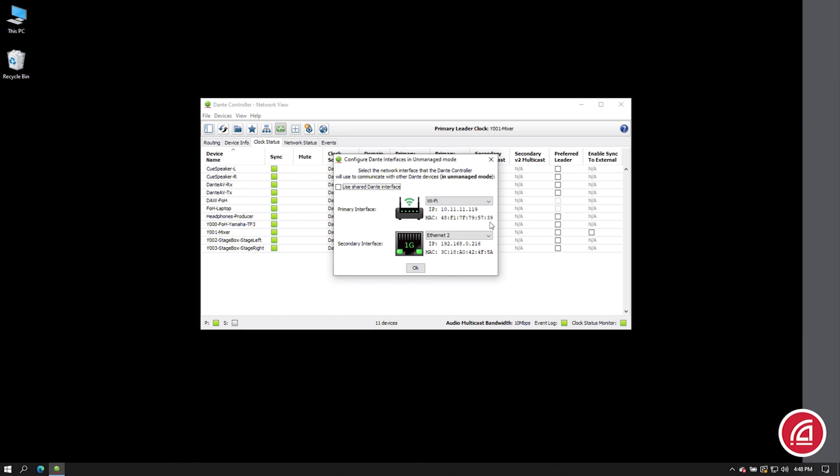While we're here, you'll see this little checkbox asking if we're using a shared Dante interface. This is asking whether there is other Dante software running on your computer, like Dante Virtual Sound Card or Dante Via. My computer is not currently running a virtual sound card, so I have this unchecked.